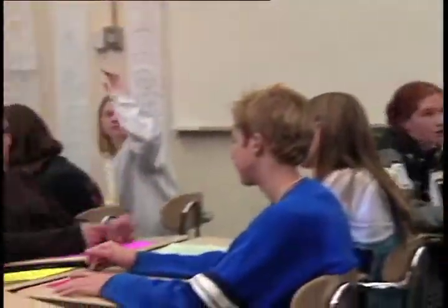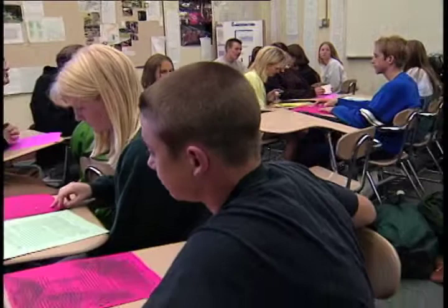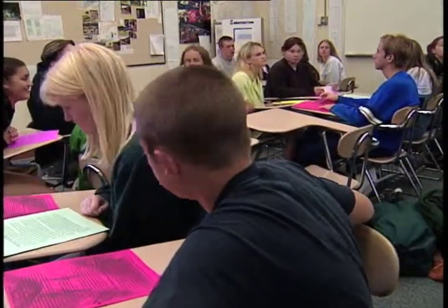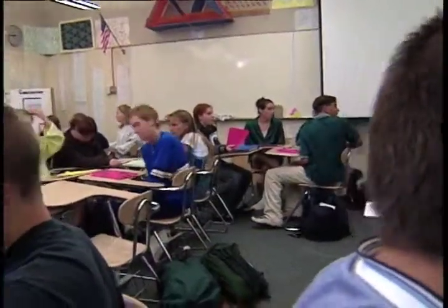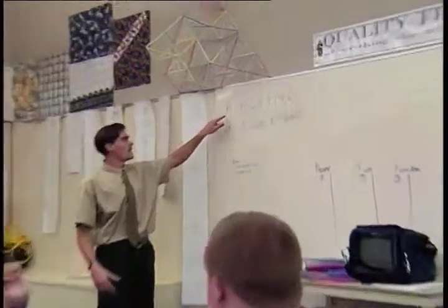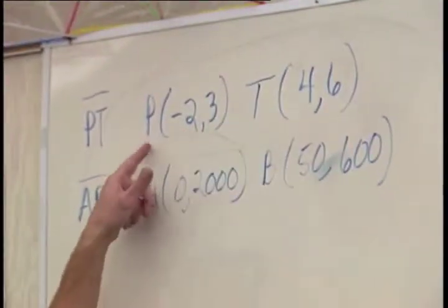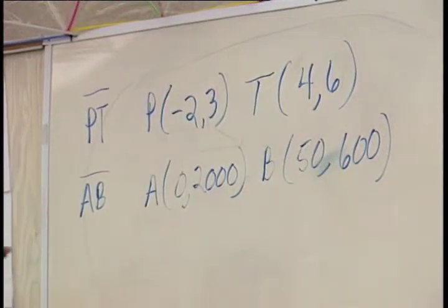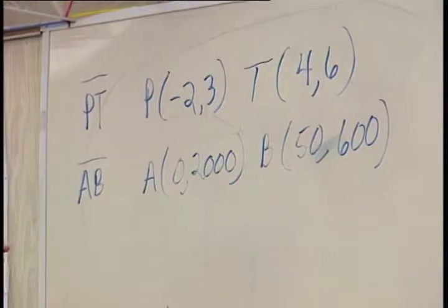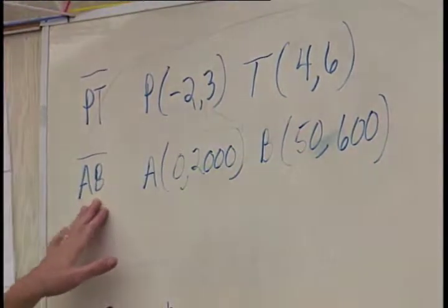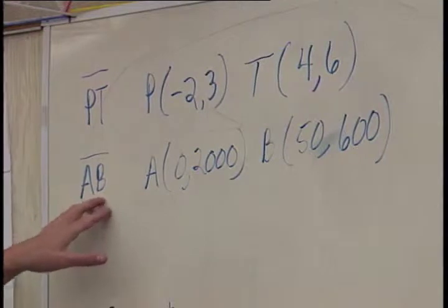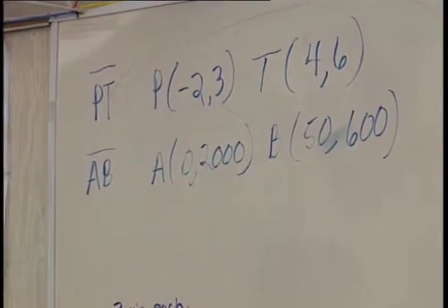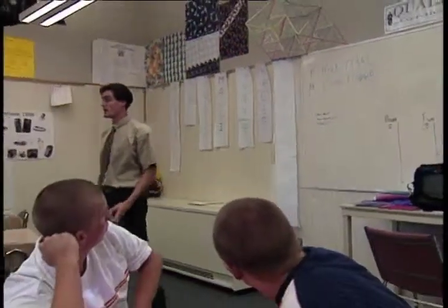Now the lesson moves to the mathematical portion, applying the needs in the math classroom. The teacher asks students to find the slope of two line segments within their groups. Point P is at (−2, 3) and point T is at (4, 6). They also need to find the slope of line segment AB, where A is at (0, 2000) and B is at (50, 600). Students work through the calculations, confirming six minus three for the first segment.